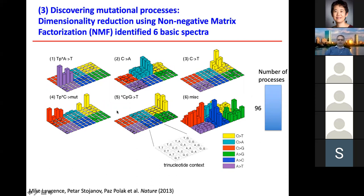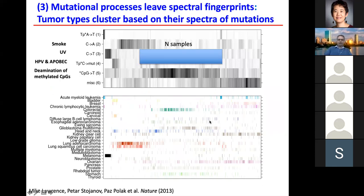Applying this non-negative matrix factorization, we identified six different signatures. Note that you have to tell the algorithm how many signatures to look for. The first was a sequencing artifact seen in AML in TCGA; the second is the smoking cigarette signature; the third is the UV signature; the fourth is the APOBEC signature; the fifth is the CpG-to-T aging signature; and the sixth captures other mutations. We could cluster samples by these signatures — leukemias showed the artifact, melanomas showed UV, lung cancers showed smoking, and bladder/cervical/head-and-neck cancers showed the APOBEC or HPV-related TPC signature.